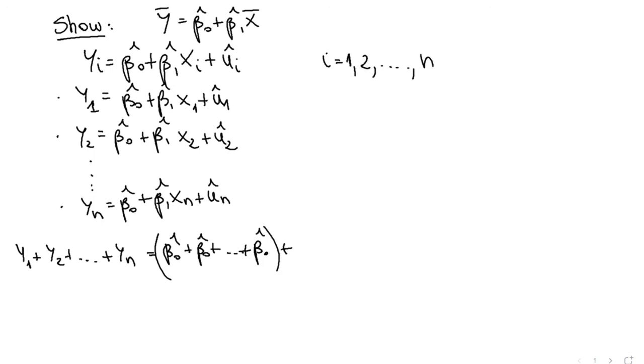Then I'm going to have the same with the beta 1 xi's. So I'm going to have beta 1 hat x1, and then I'm going to have plus beta 1 hat x2.